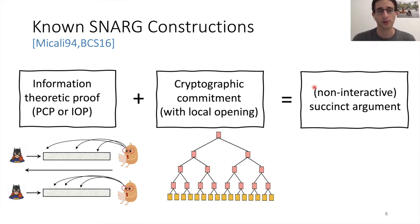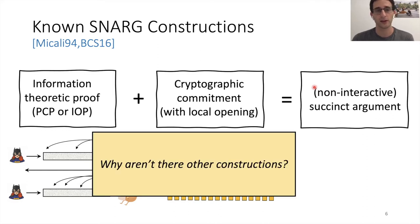So our starting point of this work is looking at these state of affairs and asking why aren't there other constructions? We have this strong model. Why don't we have more constructions? Why do all of them rely on this relatively heavy machinery of a PCP or an IOP?